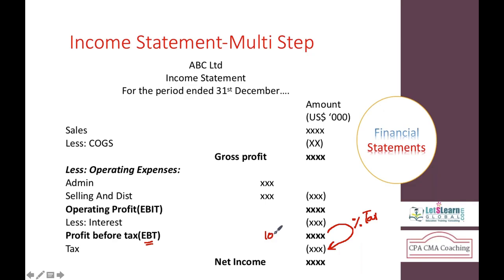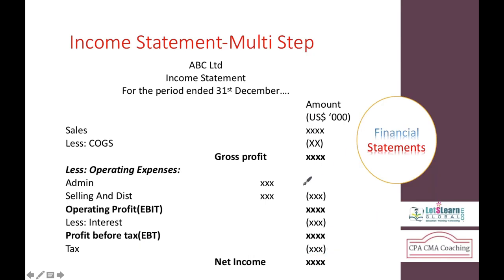For example, if your EBT is $100,000 and the tax rate is 40%, you will pay $40,000 in tax, and your net income will be $60,000. On the income statement, we have a classification of profits at different levels — that is why we call it a multi-step income statement, where you can see profits at different levels. Multi-step income statement is allowed for external reporting.